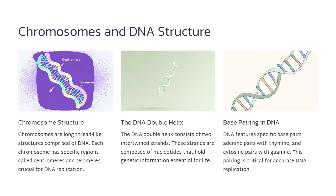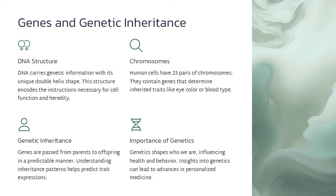Chromosomes are the thread-like structures that contain our DNA. Each chromosome has specific regions called centromeres and telomeres, which are crucial for DNA replication and cell division. The DNA molecule has a double helix structure with two intertwined strands composed of nucleotides that hold the genetic information essential for life. The DNA strands are held together by specific base pair interactions: adenine pairs with thymine and cytosine pairs with guanine.